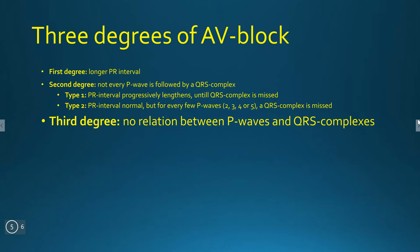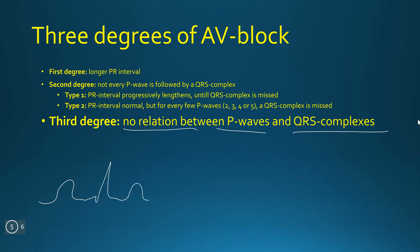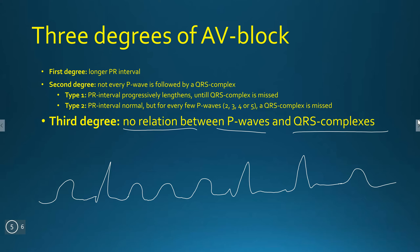In third degree AV block, there is no relation between P waves and QRS complexes. So we have: P wave, QRS complex, T wave — P wave, P wave — QRS complex, QRS complex — P wave. This is a third degree AV block, which is a form of AV dissociation.